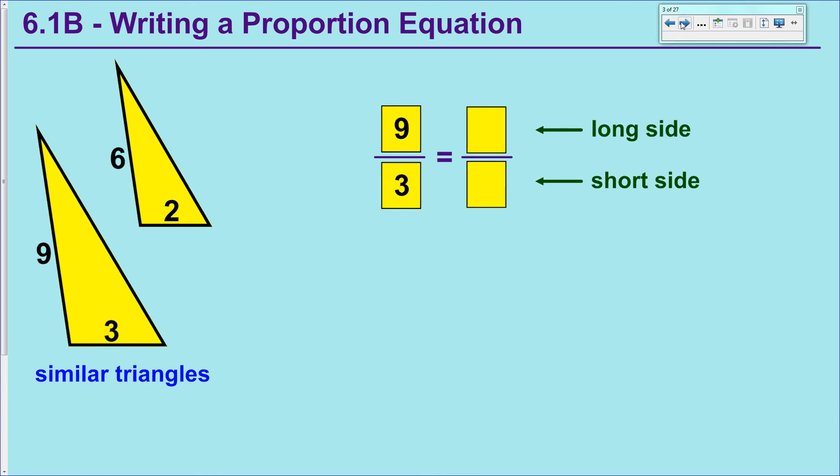I can put the large triangle information on the left of my equation or the right side of my equation. I have a lot of flexibility there, but so long as I'm consistent long on top, short on bottom, I should be good to go. So you'll see if I set up this equation properly, I've got 9 over 3, which is 3, and if I fill it in for the second triangle, I've got 6 over 2, which is also 3. So this happens to be a true proportion.